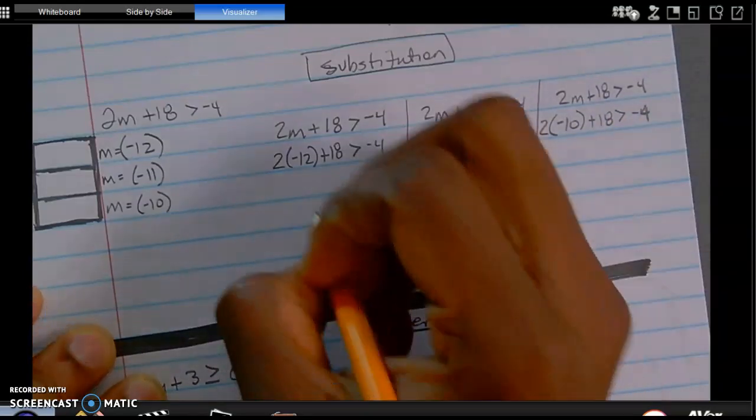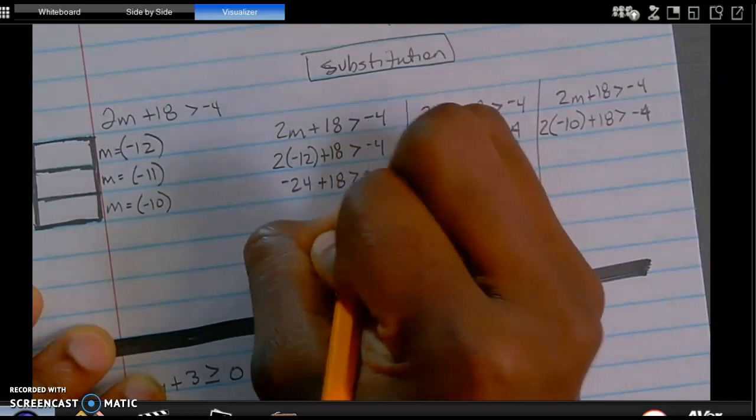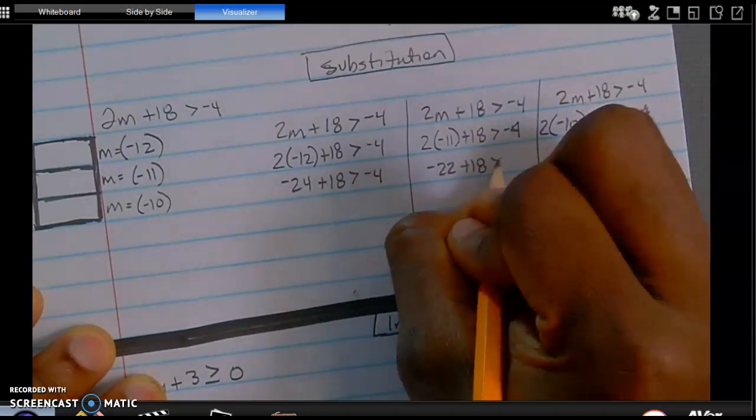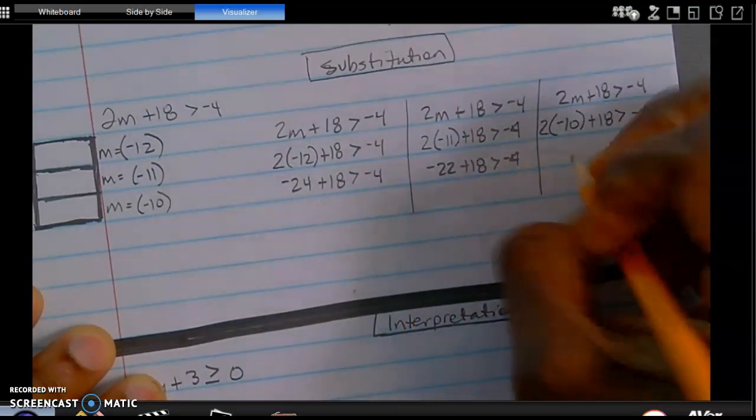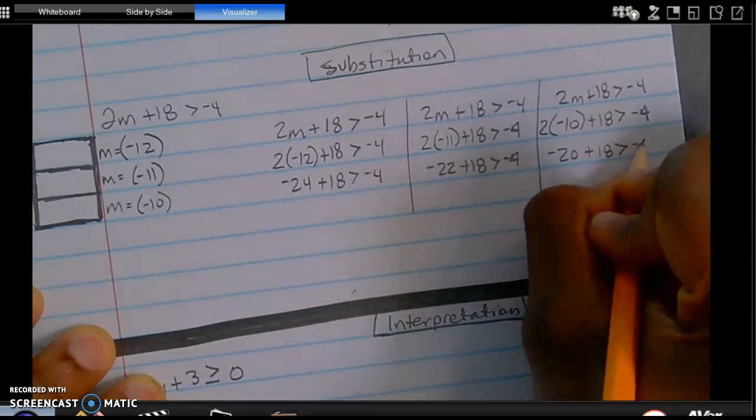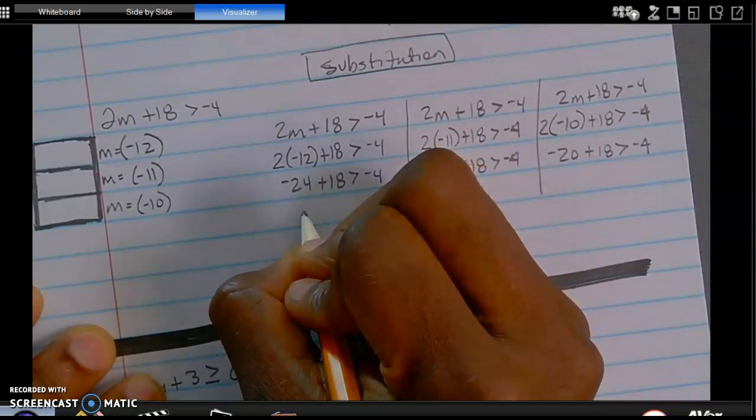So now I have negative 24, and I'm just working to simplify at this point. It seems like I'm doing a lot of work, possibly going to Walmart. Negative 20 plus 18 is greater than negative 4. So I'm still just whittling this down.